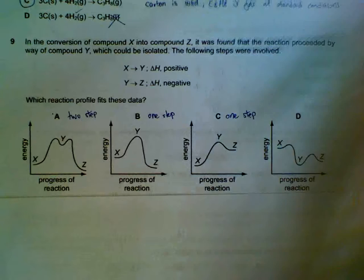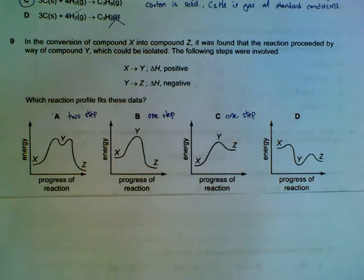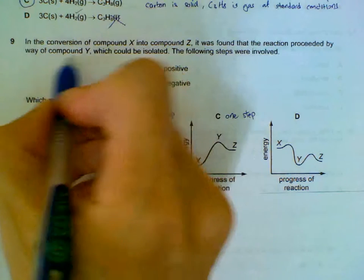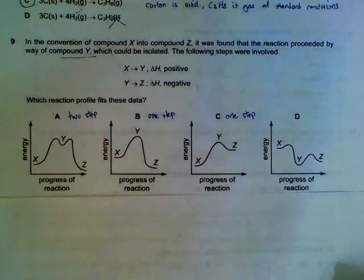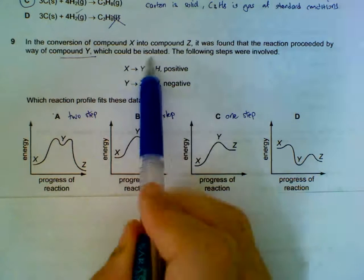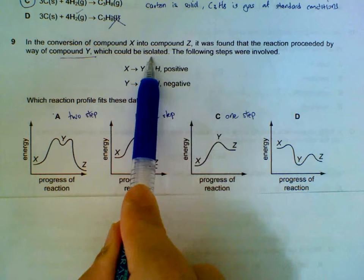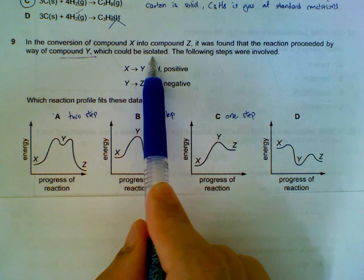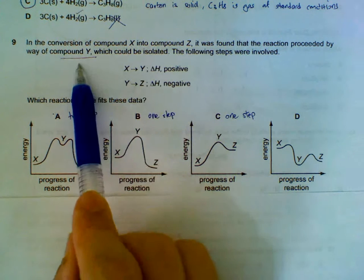Number 9. We have a 2-step reaction being described. Because we know that the intermediate, there is an intermediate form. Because it's described as being isolated. Compared to they say that a transition state is formed. Then we have a 1-step reaction. This is an intermediate.